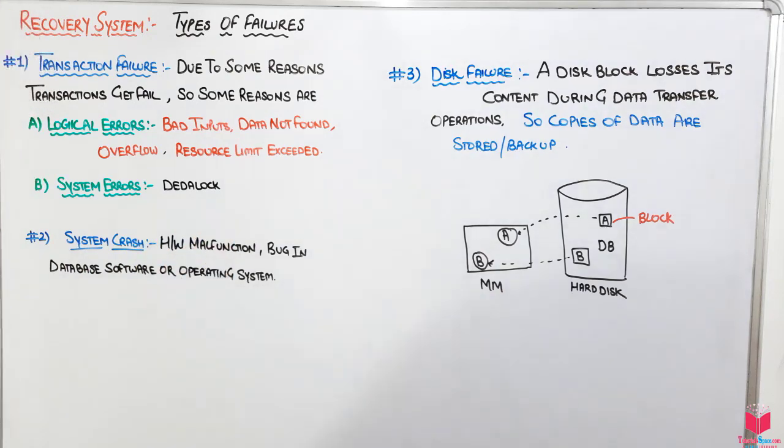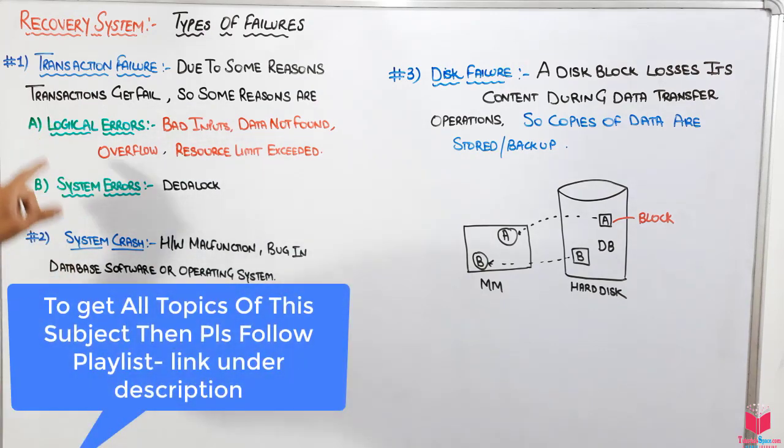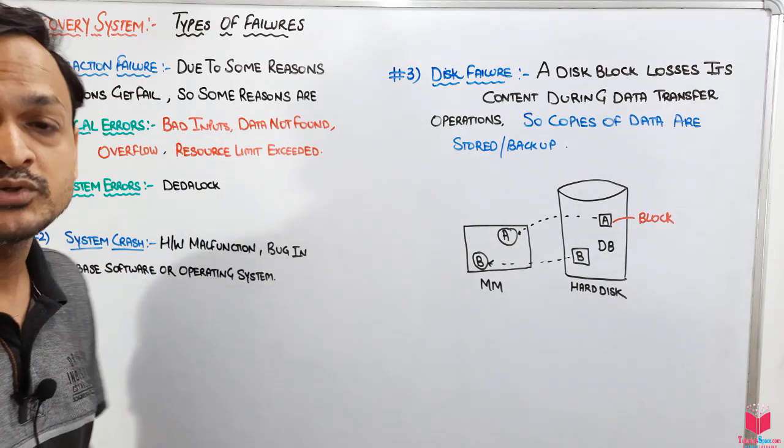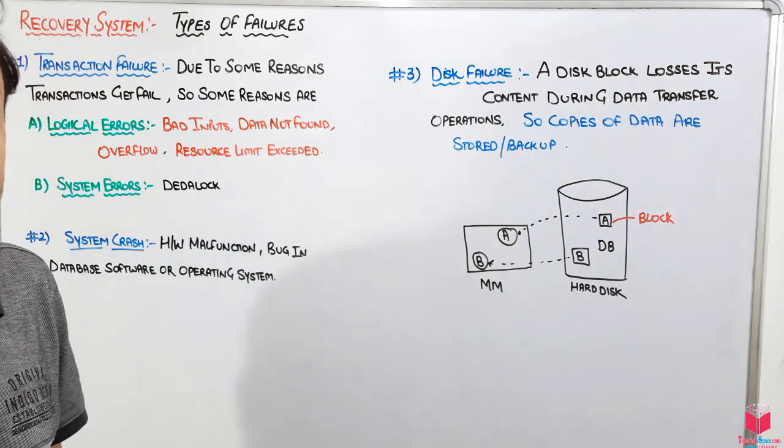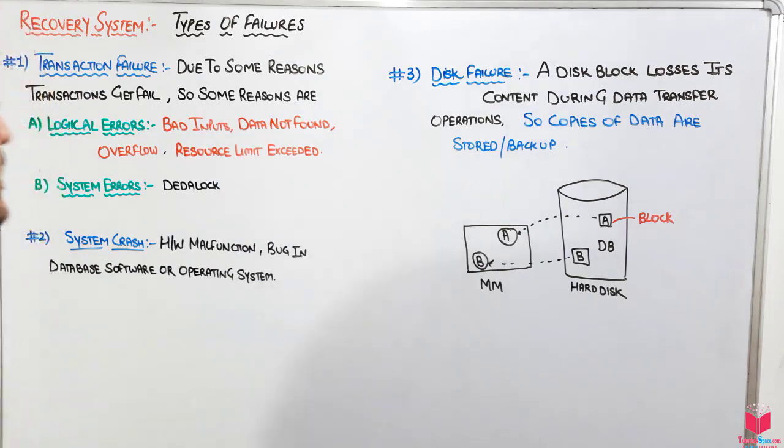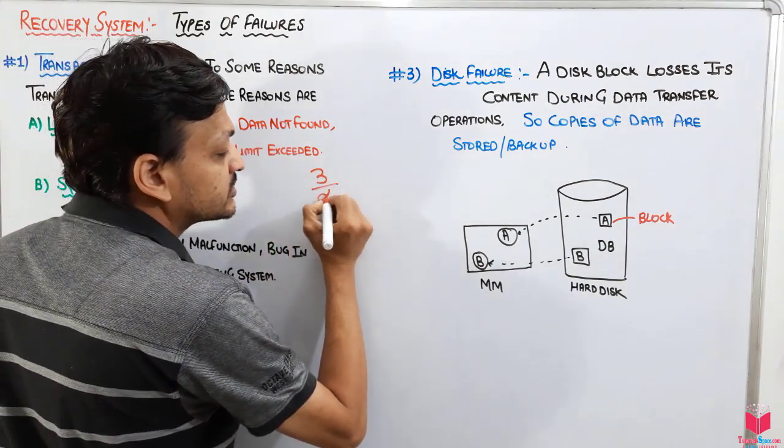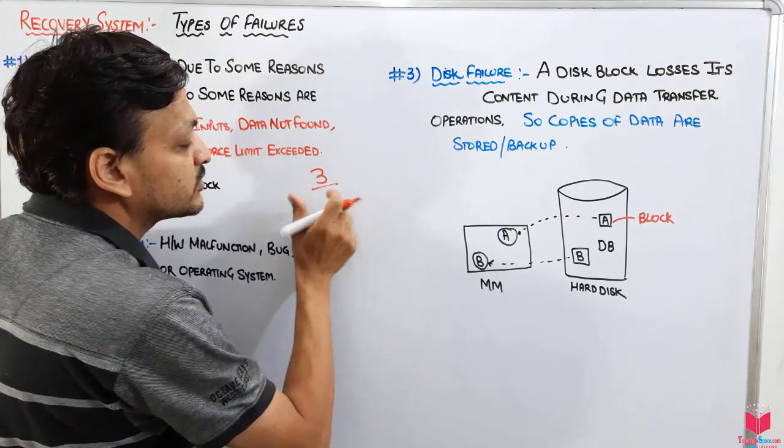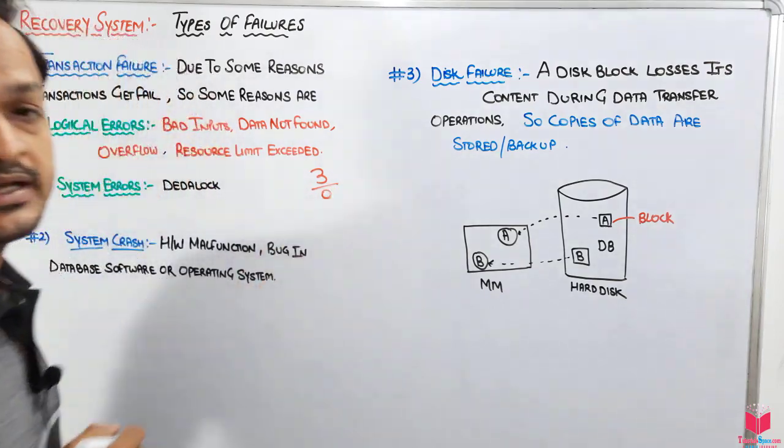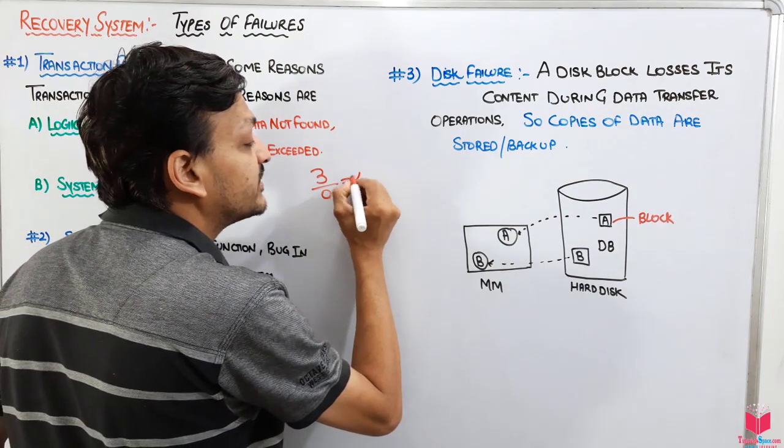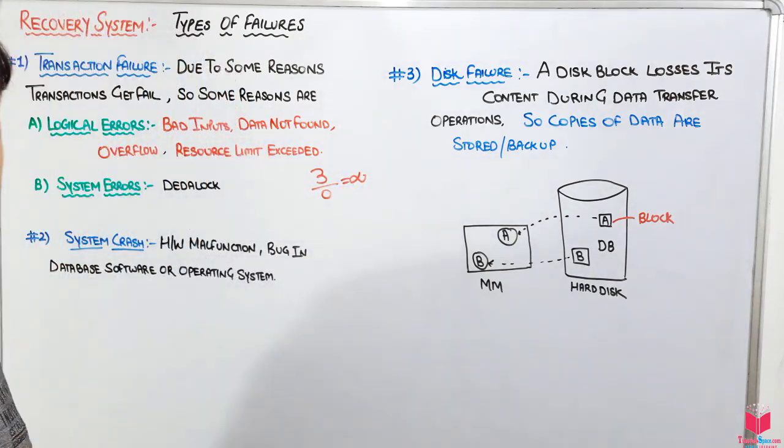We will discuss what are these reasons. The first is a logical error and the second is the system error. The logical error says first is a bad input. Due to the bad input, transaction gets stopped. Why? Suppose we are going to do this operation, three divided... suppose zero is passed here, then its result will be infinity.